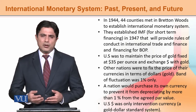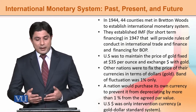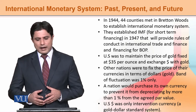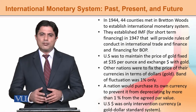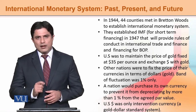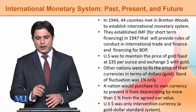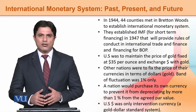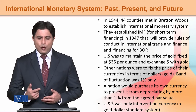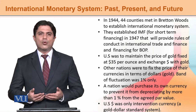Some rules were set where the US maintained the price of gold fixed at $35 per ounce, and the dollar was exchangeable with gold. The responsibility was placed on the dollar to exchange into gold if needed by any entity or government. Other nations fixed the price of their currencies in terms of the dollar, which was in fact backed by gold.